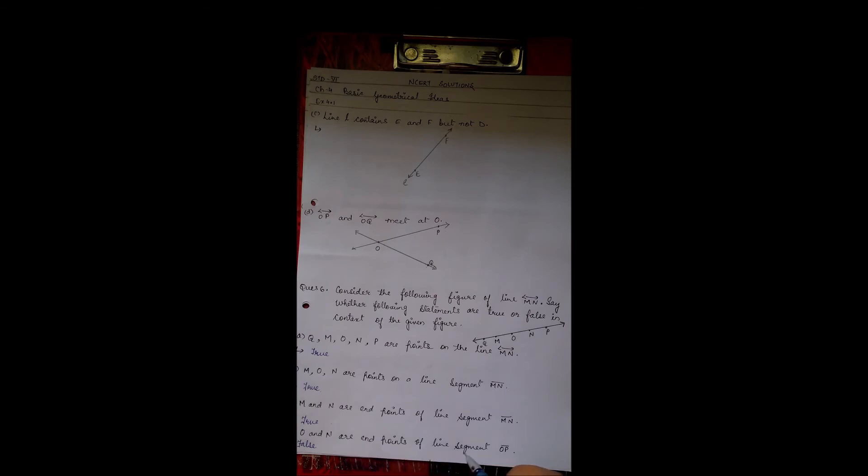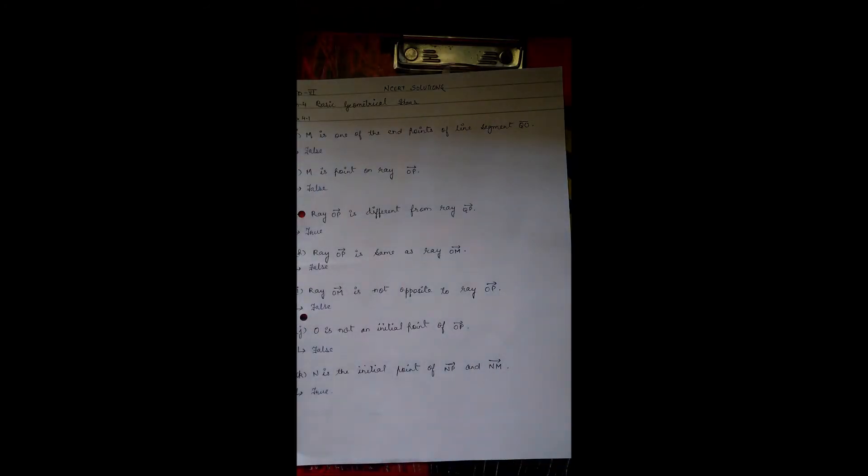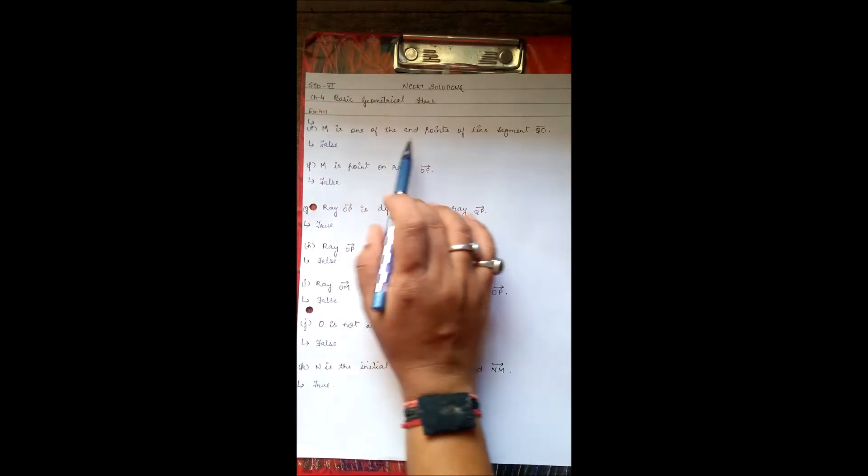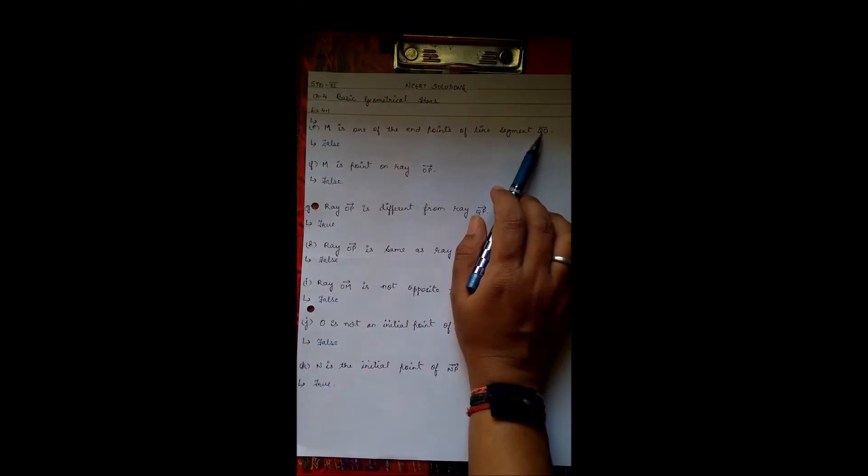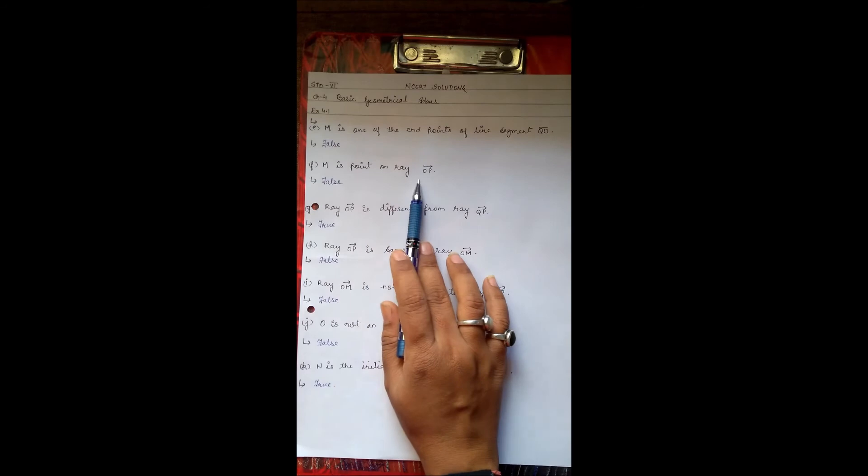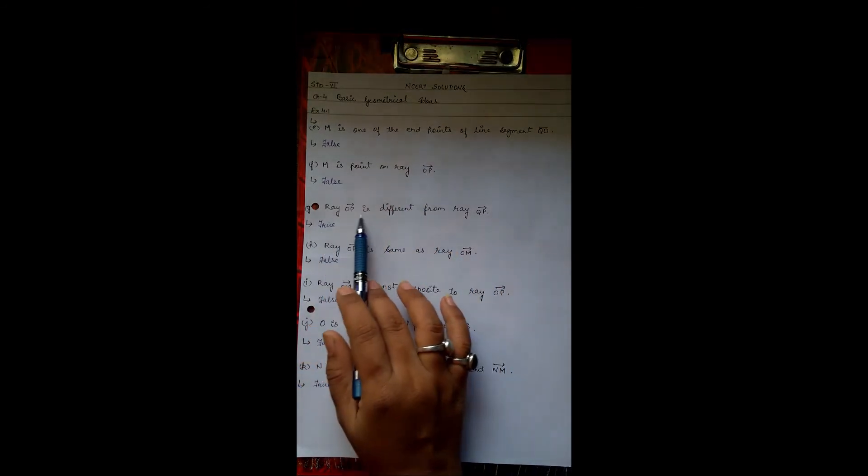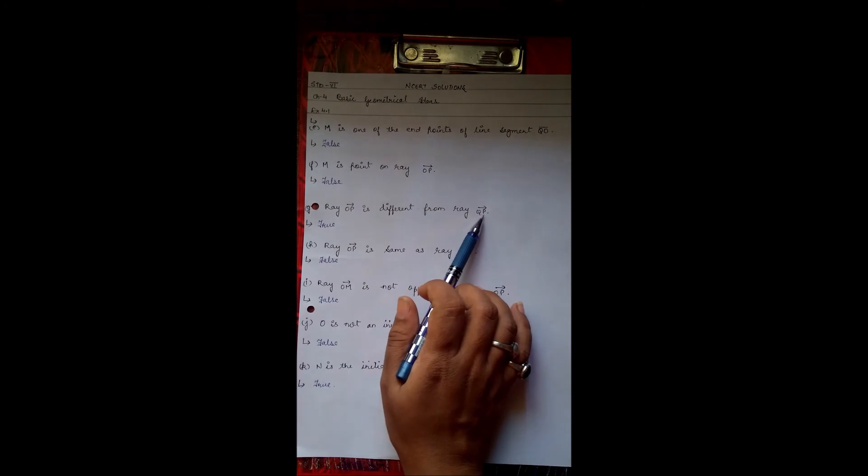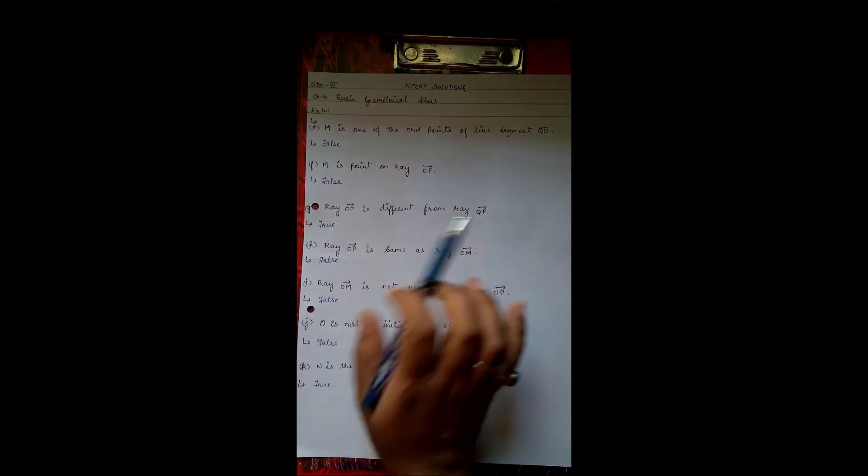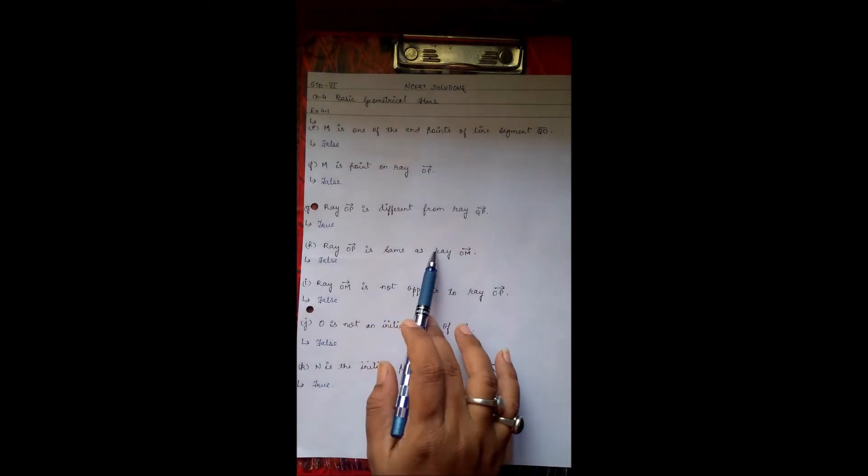O and N are the end points of the line segment OP. False. M is one of the end points of line segment QO. False. M is point on ray OP. False. Ray OP is different from ray QP. True.